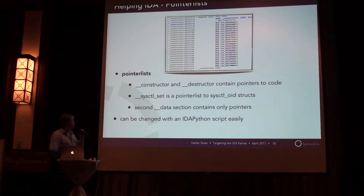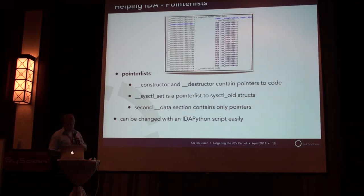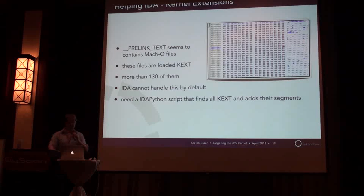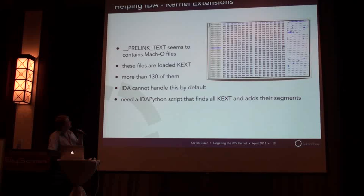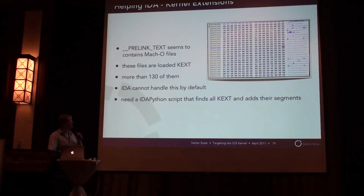The first thing you can do is go to all the sections that contain pointer lists and create a small IDA Python script that tells IDA these are pointers — this helps IDA load the binary in a better way, though it only helps a little bit. What's better is to look at the pre-linked text section. When you look at it in detail, you will see that this section actually contains more than 130 Mach-O files, and of course IDA cannot deal with nested Mach-O files, so you have to help it again by writing an IDA Python script.